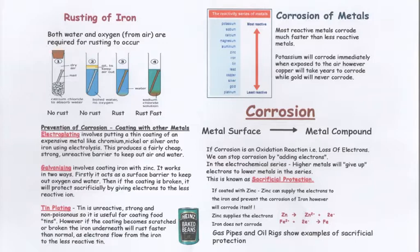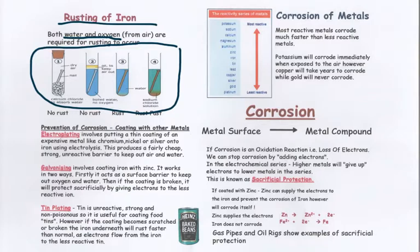One specific type of corrosion is called rusting. Rusting is the corrosion of iron. Iron requires two things to be able to corrode, both water and oxygen. In the experiment carried out in class, test tubes were set up as you can see. And when water wasn't present, test tube 1, no corrosion was noted. When oxygen wasn't present in the water, test tube 2, corrosion wasn't present.